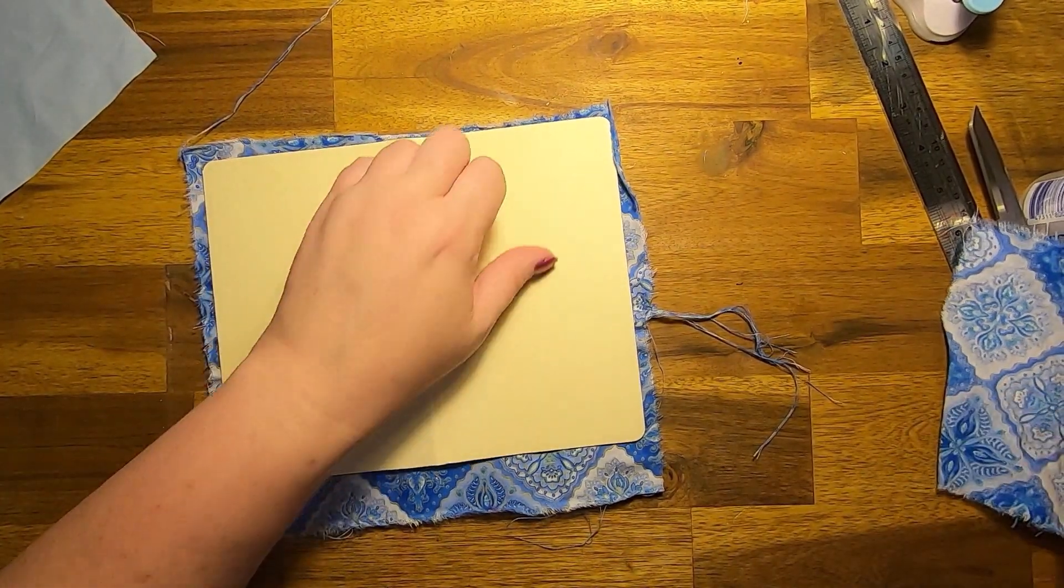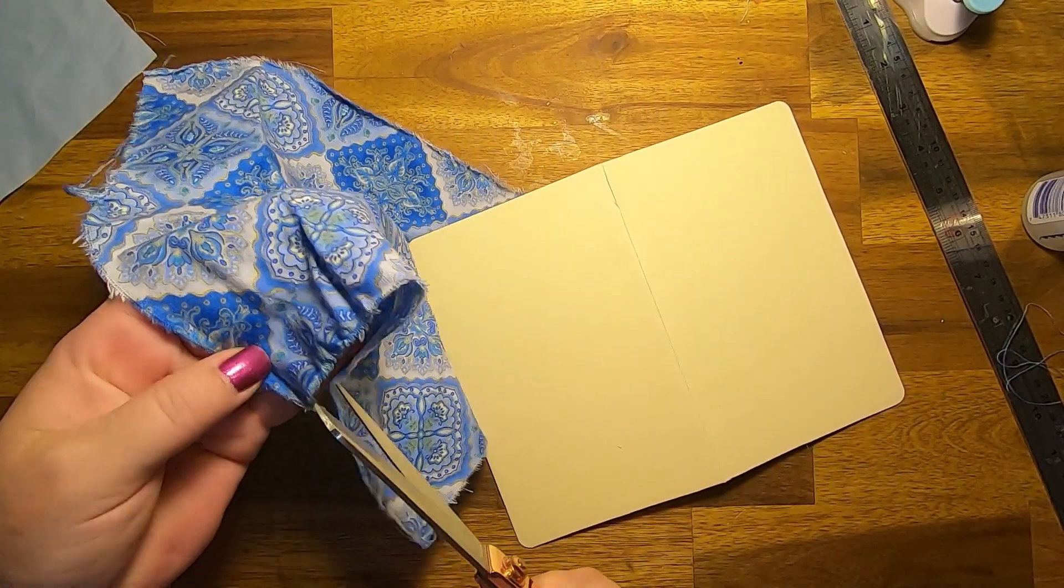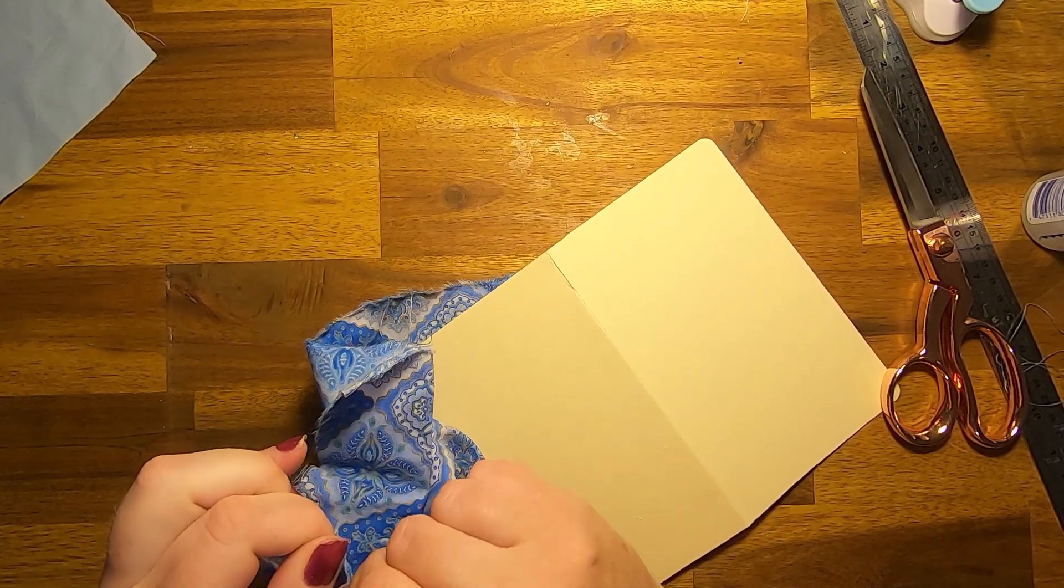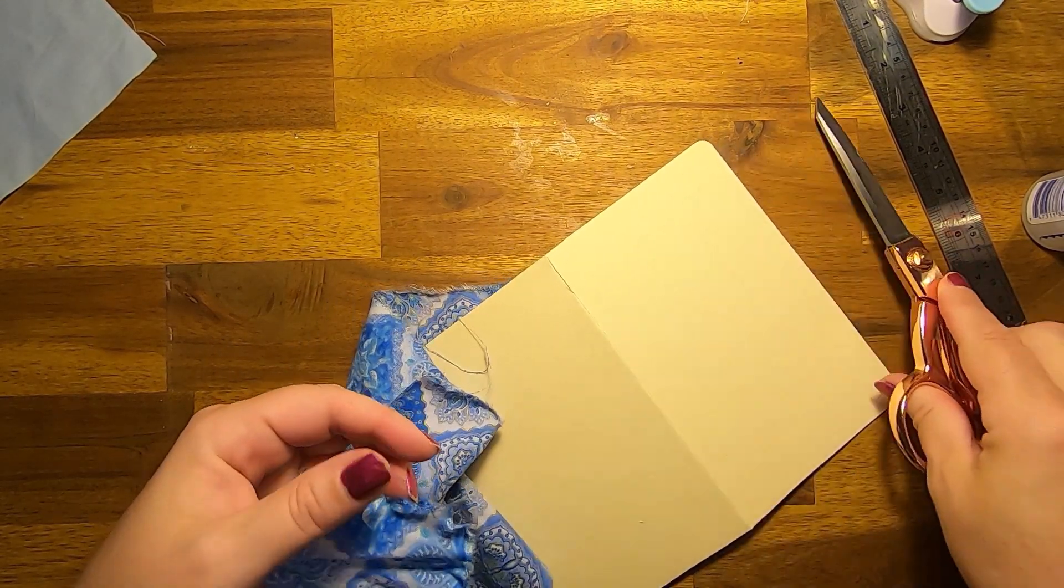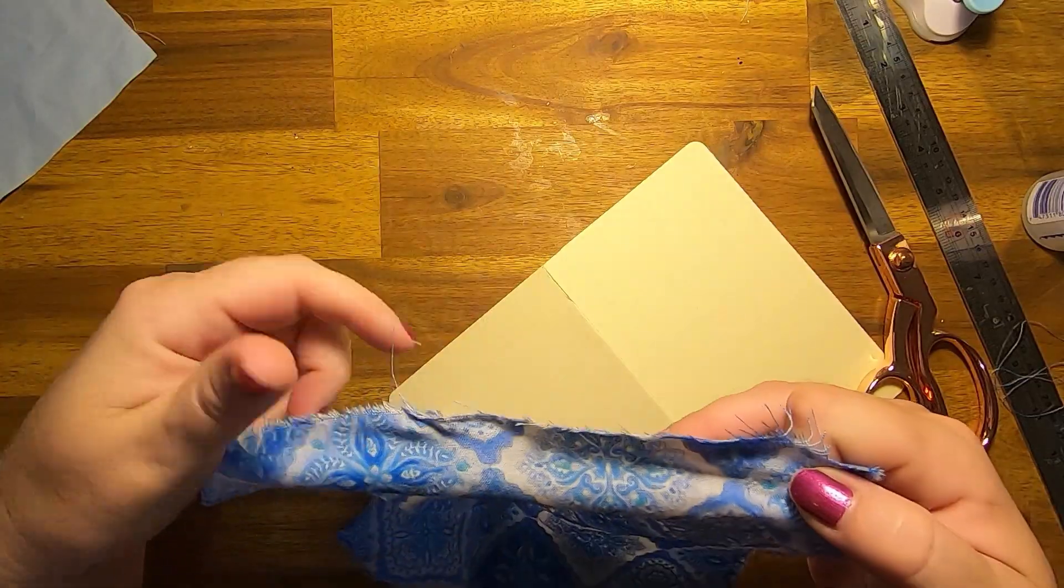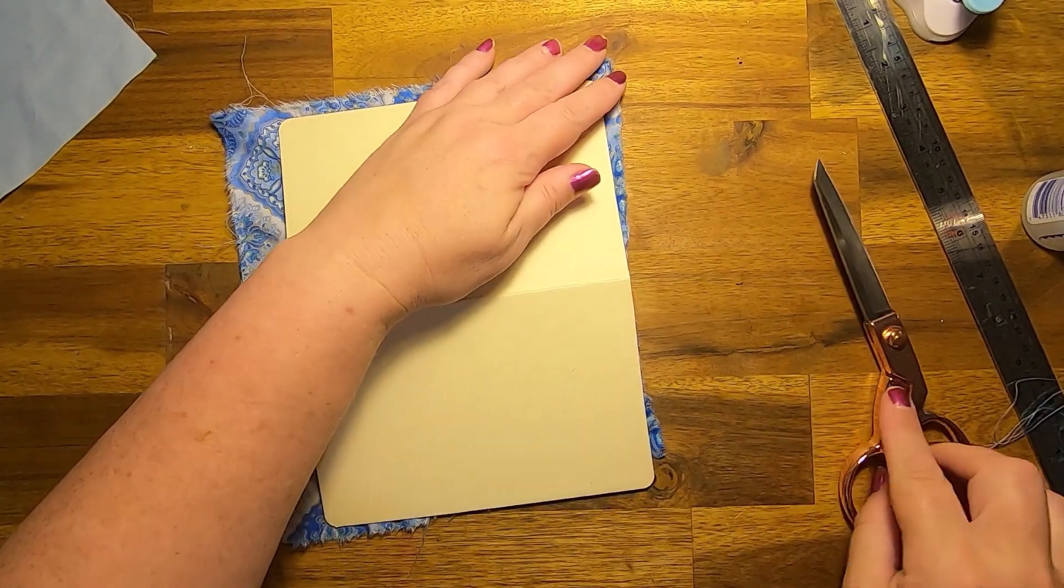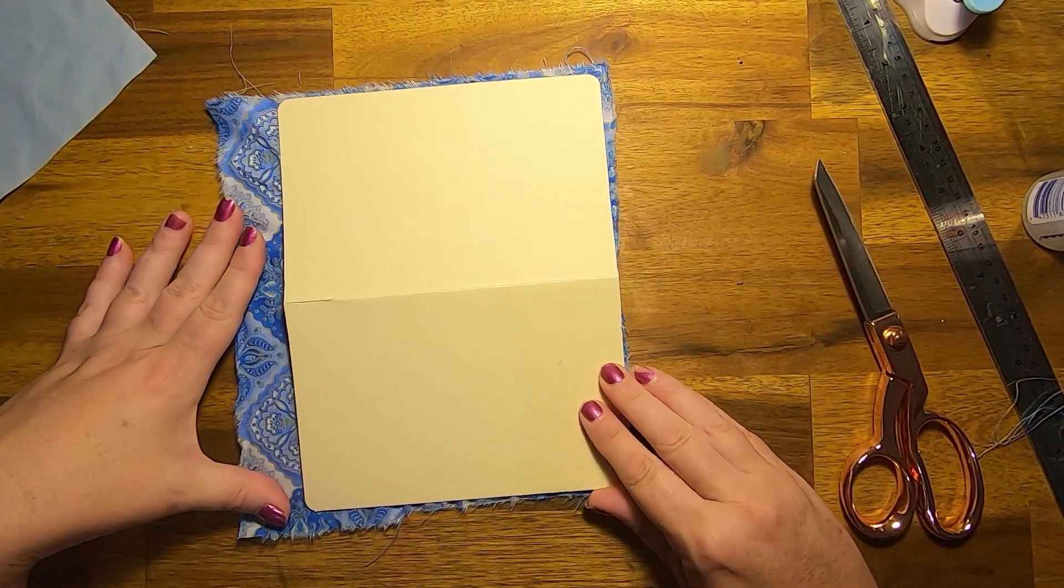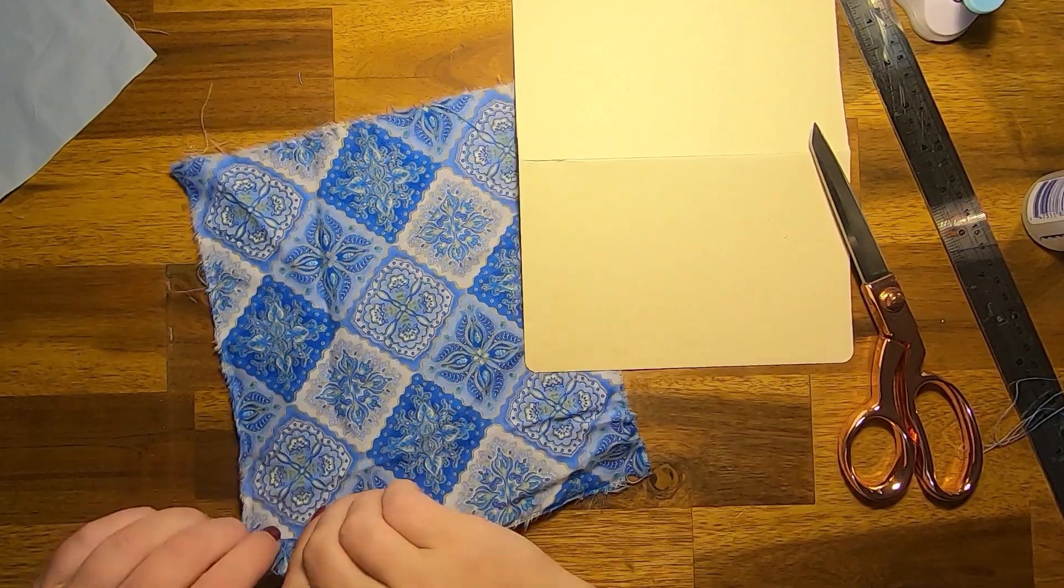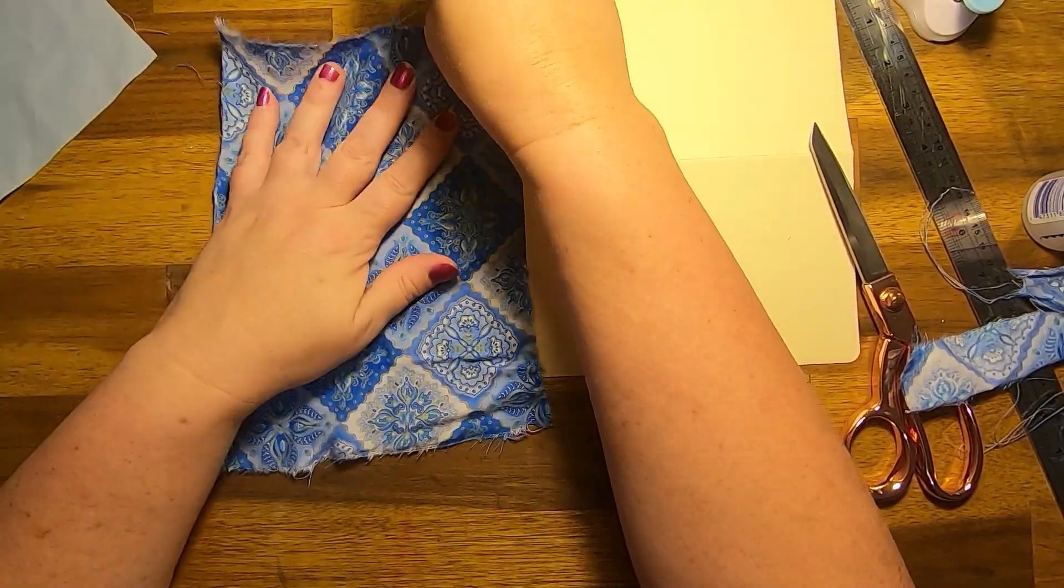So I need to trim this down a smidge because otherwise it's going to be too big and you lose the fray if you glue it on and then need to cut it down. So you want to make it just a little tiny bit bigger than your card. Just a tiny smidge.